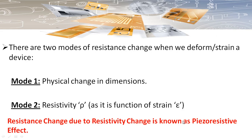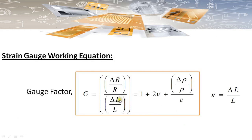The strain gauge working equation is given by the gauge factor, which is equal to the per unit change in resistance divided by the per unit change in length — that is, how much the resistance will change when subjected to strain. This gauge factor is given by 1 + 2ν, where ν is the Poisson's ratio, plus the change in resistivity divided by the strain (δL/L).